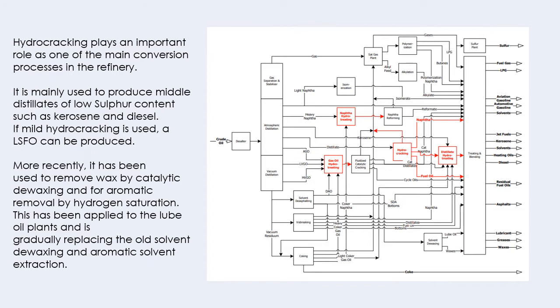Here I have attached a full process flow sheet of a refining industry with the hydrocracking and hydro-treating units in red. Hydrocracking plays an important role as one of the main conversion processes in the refinery. It's mainly used to produce metal distillates of low sulfur content such as kerosene and diesel. If mild hydrocracking is used, LFSO can be produced. More recently it has been used to remove wax by catalytic de-waxing and for aromatic removal by hydrogen saturation. This has been applied to lube oil plants, gradually replacing the old solvent de-waxing and aromatic solvent extraction.